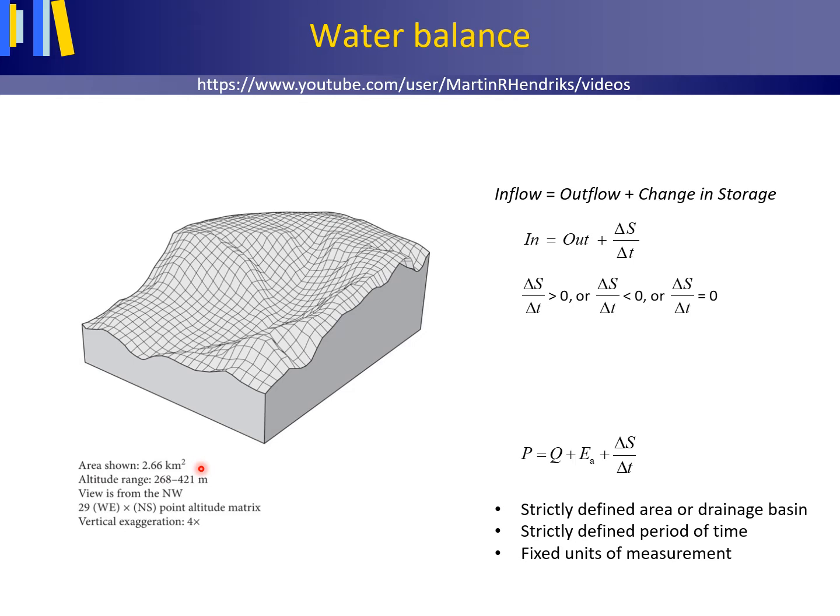The area of the catchment is 2.66 square kilometers. The water balance is basically the bookkeeping of the volume of water per unit of time that enters the system, inflow, leaves the system, outflow, and the change in water storage in the system in that same specified period of time.